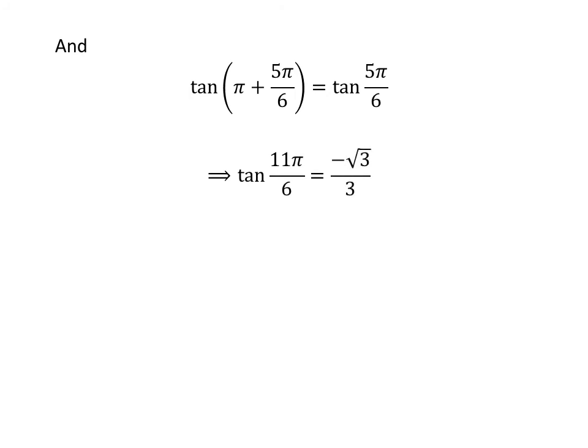As pi plus 5 times pi upon 6 is equal to 11 times pi upon 6, and plugging the value of tangent of 5 times pi upon 6 gives us tangent of 11 times pi upon 6 is equal to minus square root of 3 upon 3.